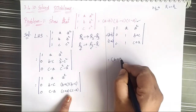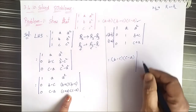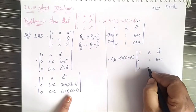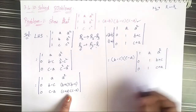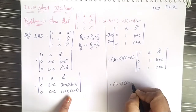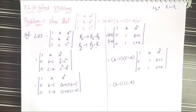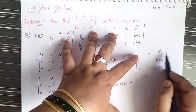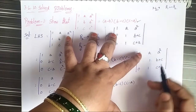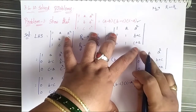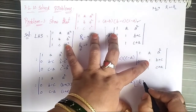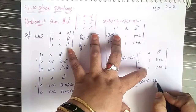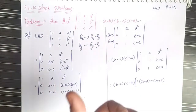This gives (b minus c) into (c minus a) times the determinant with rows (1, a, a²), (0, 1, b plus c), (0, 1, c plus a). Now we expand this determinant along the first row. The first element is 1, and we delete its row and column, giving the minor (c plus a minus b plus c).